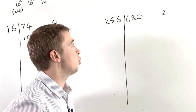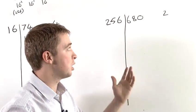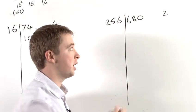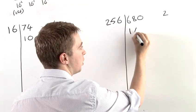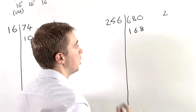2 times 256 is 512, and so our remainder is 168, which we're going to put down here.